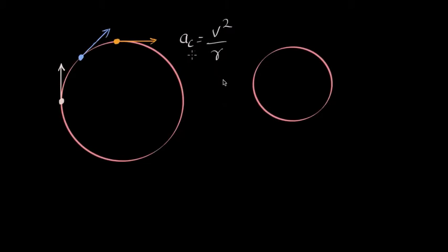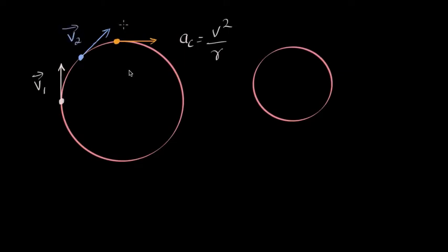Now we are going to prove it. There are many methods to prove it. The velocity direction continuously changes while the magnitude remains constant. When you write it in vector form, you get different velocities: v1, v2, and v3. The magnitude is constant but the direction is changing — this is why the velocity vectors are different.